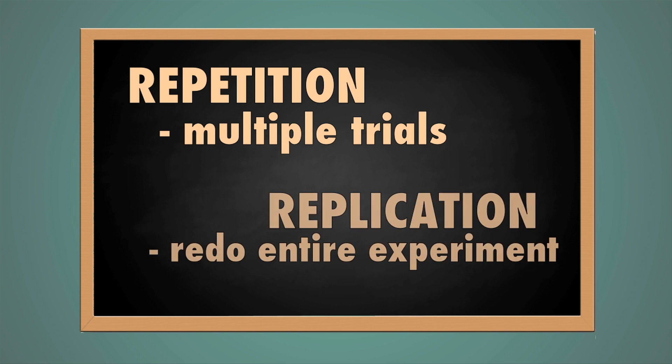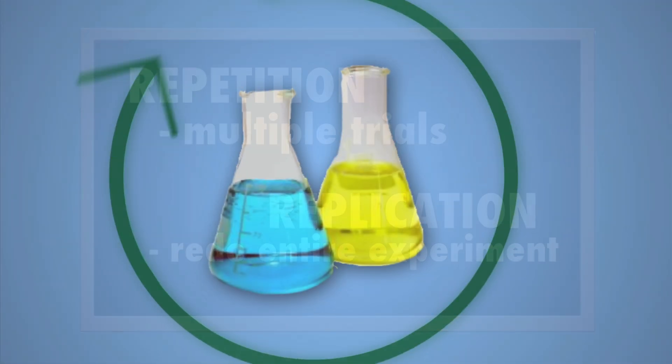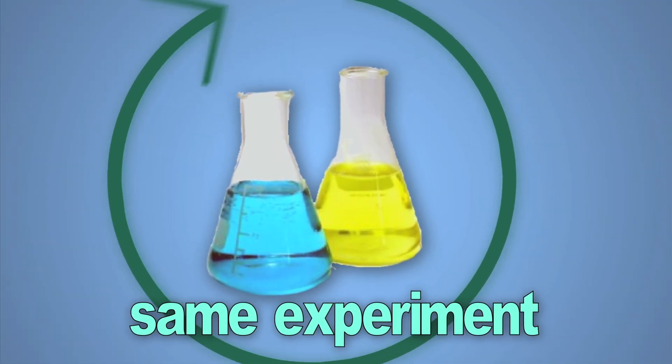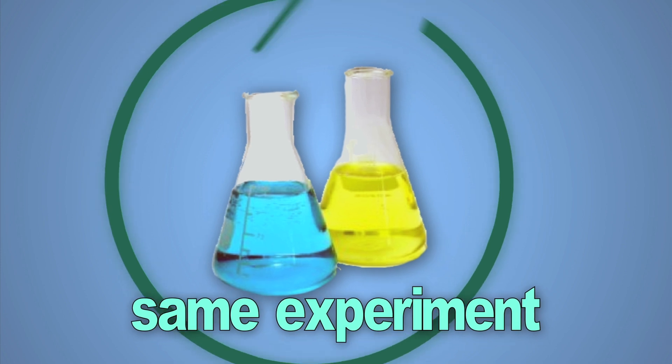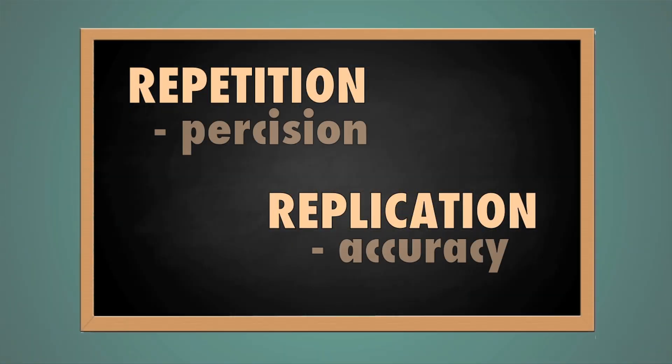Repetition in science means conducting multiple trials of an experiment, while replication is when you do the same experiment over in its entirety. Both repetition and replication affect different parts of the experimental process.